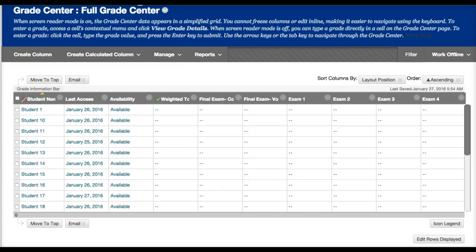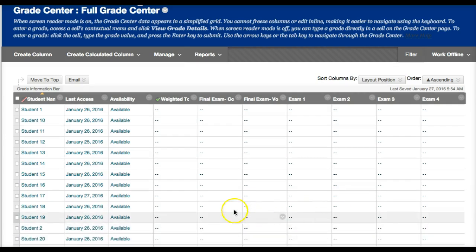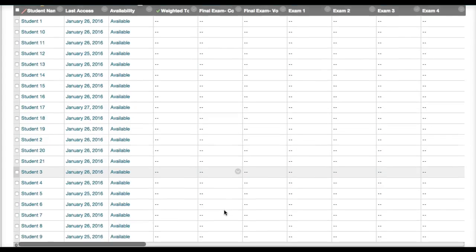You want to be able to view all of your students in the gradebook. The default view is 10 students. You want to go to edit rows displayed and change this to 25. And this will allow you to view all of your students on one page.